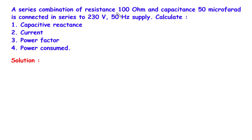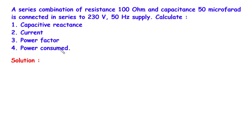A series combination of resistance 100 Ohm and capacitance 50 microfarad is connected in series to a 230V, 50Hz supply. Calculate: No. 1 capacitive reactance, No. 2 current, No. 3 power factor, and No. 4 power consumed.